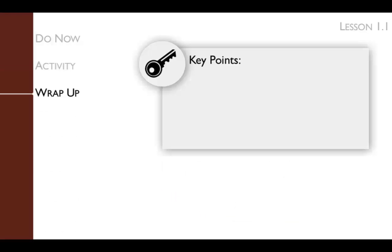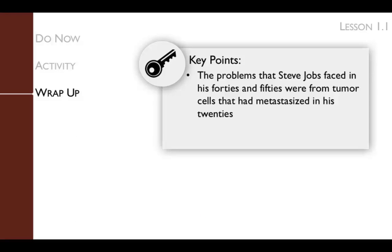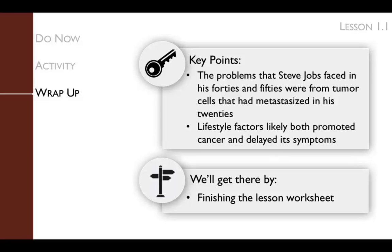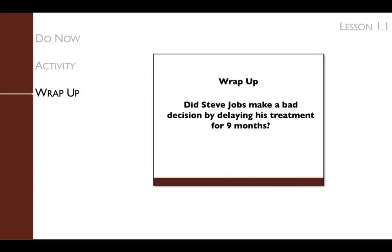The key points of the wrap-up are that the problems Steve Jobs faced in his 40s and 50s were from tumor cells that had metastasized in his 20s, and that lifestyle factors likely both promoted cancer and delayed its symptoms. In the wrap-up, we return to the question posed at the beginning of the lesson. Give students a minute to respond to question 8 on their worksheets, then have them discuss their answers. They should conclude that delaying treatment by 9 months likely had little impact on the overall outcome, since his tumor had already migrated to the liver and lungs when he was in his 20s.